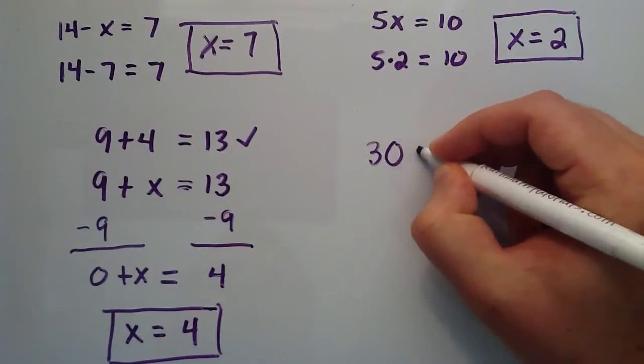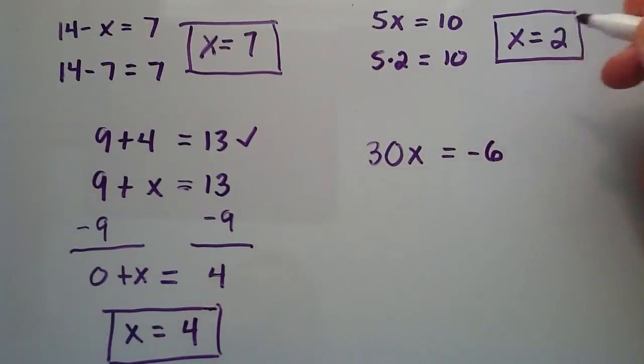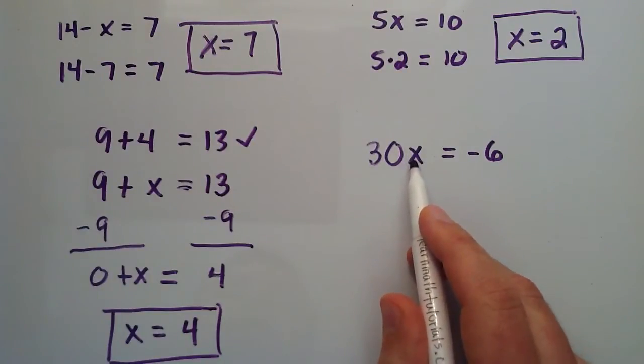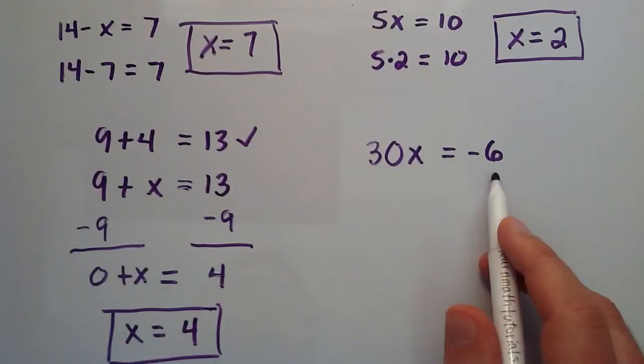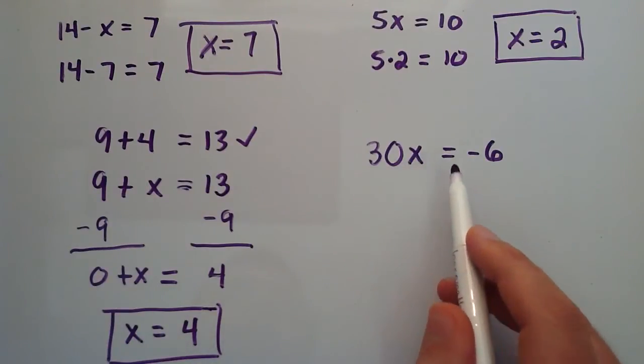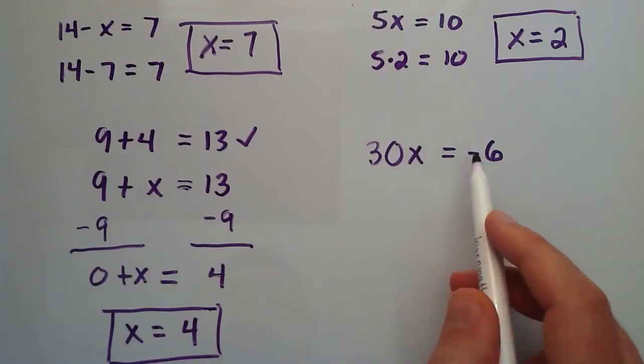We have 30 times x is equal to negative 6. Now we're asking ourselves, what value does x have to be in order for this statement to be true? This is a little bit hard to see. So, let's just go ahead and realize that because of this equal sign, we know that this entire side is equal to negative 6.